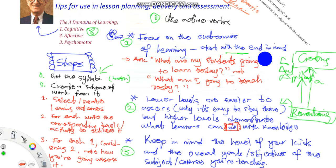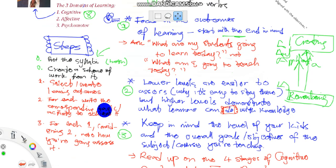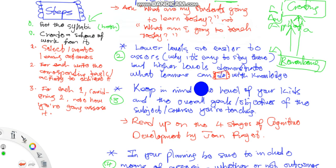This is what we want for very effective citizens and workplace workers. Now the third one is for you to keep in mind the level of your children. And this is where in another video I'll try and do some work on the four stages of development, cognitive development by Jean Piaget.